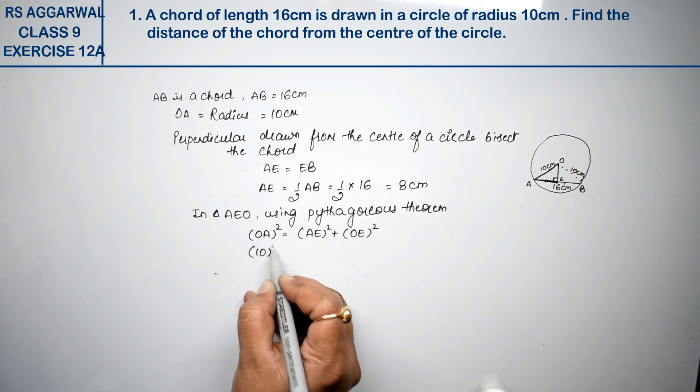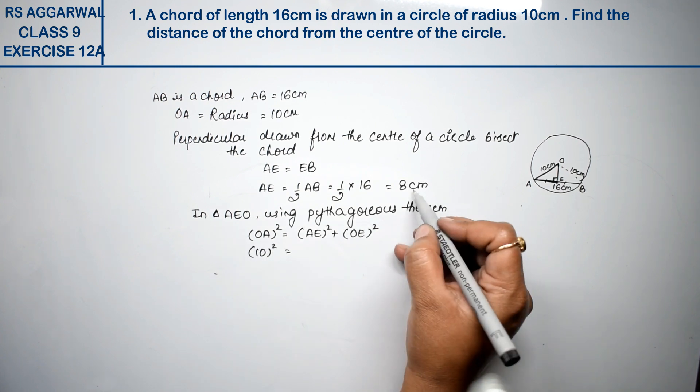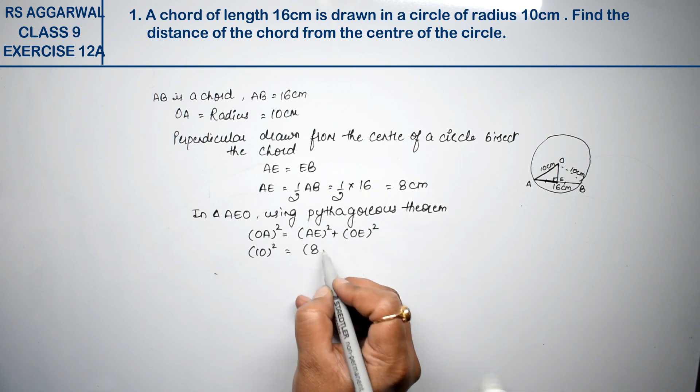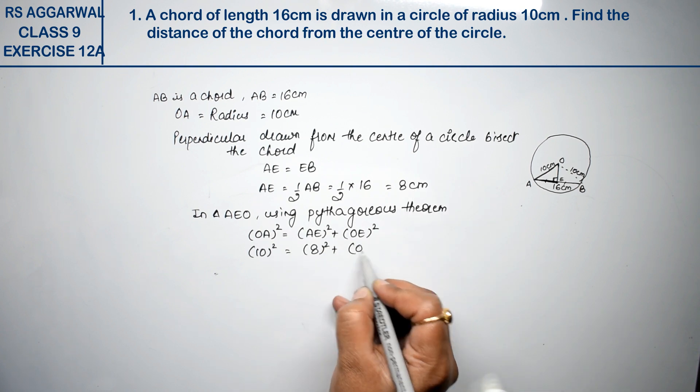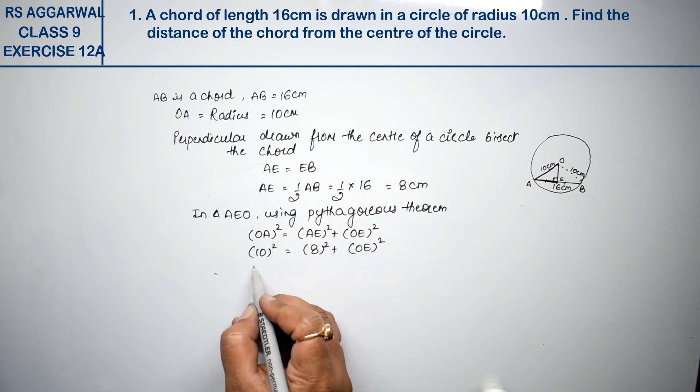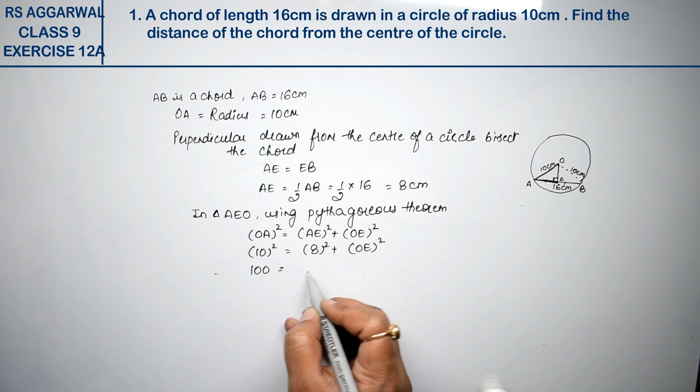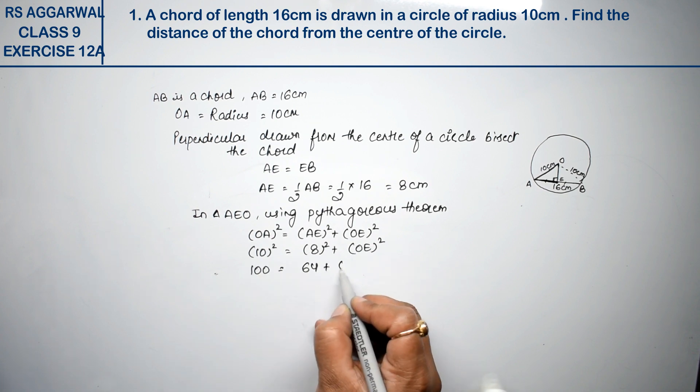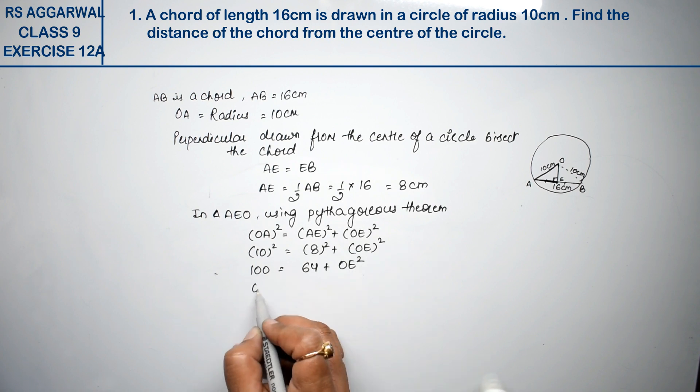AE is equal to 8 whole square plus OE we have to find. 100 equals to 64 plus OE square. OE square is 100 minus 64.